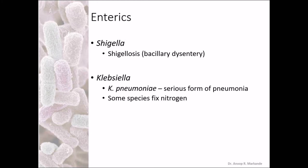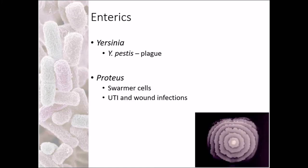Yersinia pestis is the causative agent of plague or black death. Proteus vulgaris and Proteus are well-known UTI and wound infection pathogens. Proteus are also well known for their swarming motility, as seen in this image — the growth of the colony is in the center while the newly formed bacteria are swarming away from the central colony, hence this is swarming motility where the bacteria are moving away on the agar.